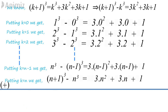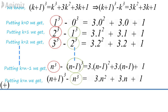We are going to calculate the left hand side. When we put K equals to 0 we get 1 cube minus 0 cube, and where we put K equals to 1 we get 2 cube minus 1 cube. So one of the 1 cube is positive and one is negative, and similarly one of the 2 cube is positive and one is negative. This keeps happening — 3 cube, 4 cube all have positive and negative parts that cancel each other out. What remains on the left hand side is N plus 1 whole cube minus 0.